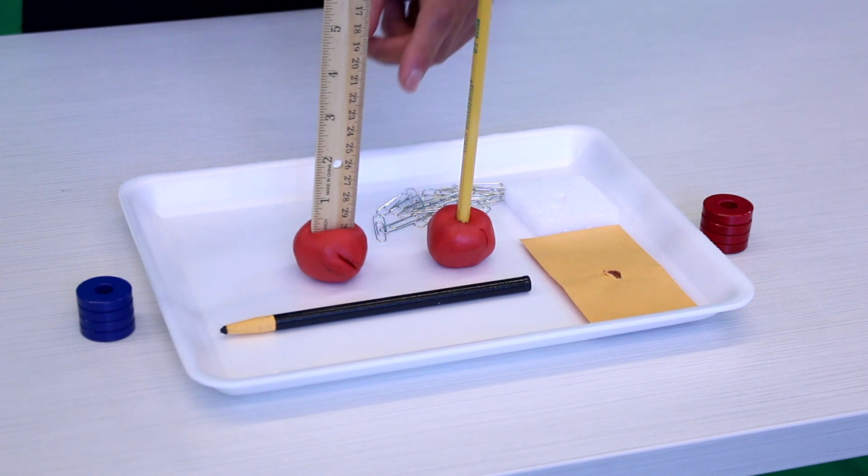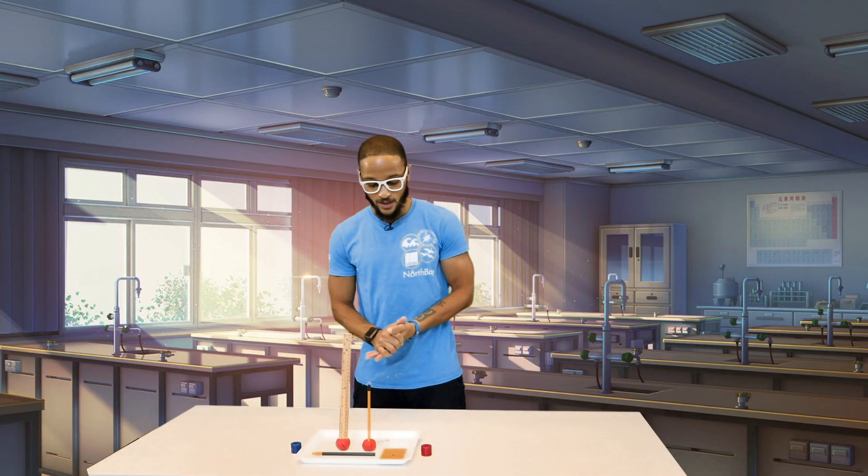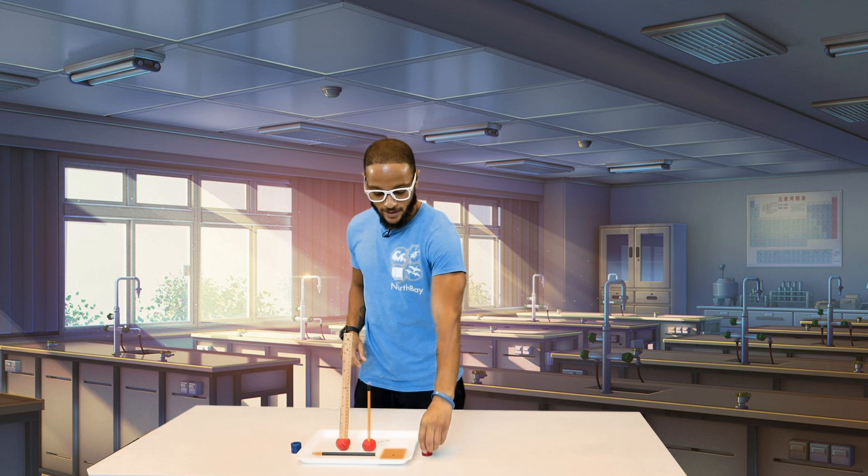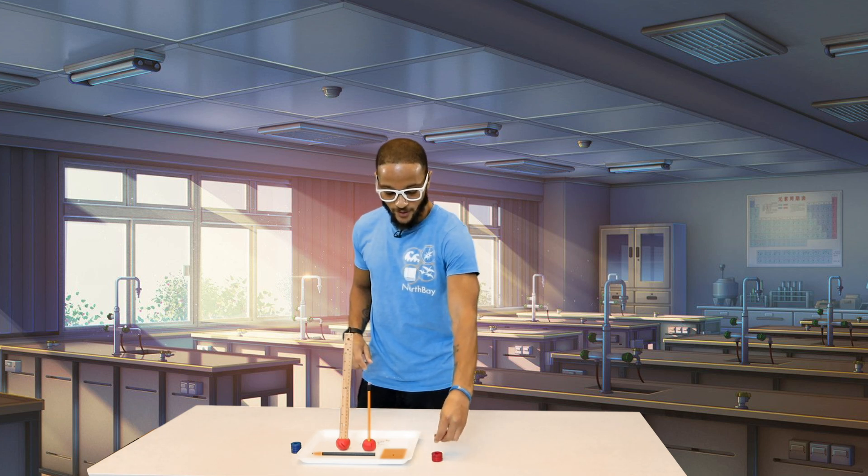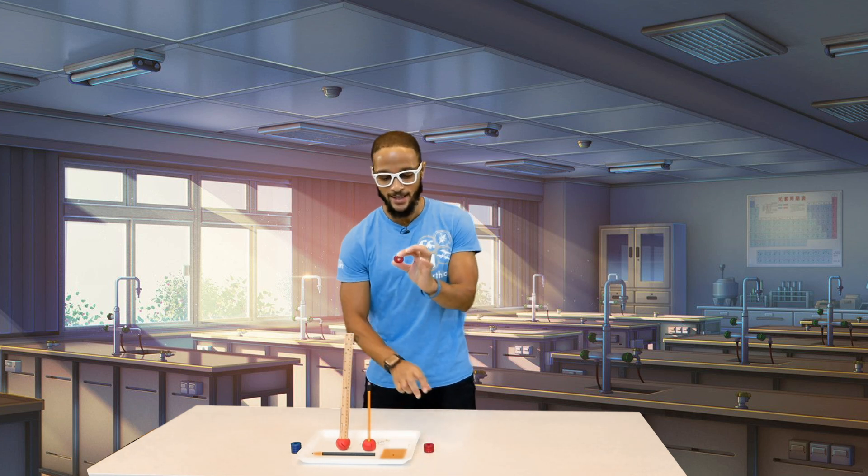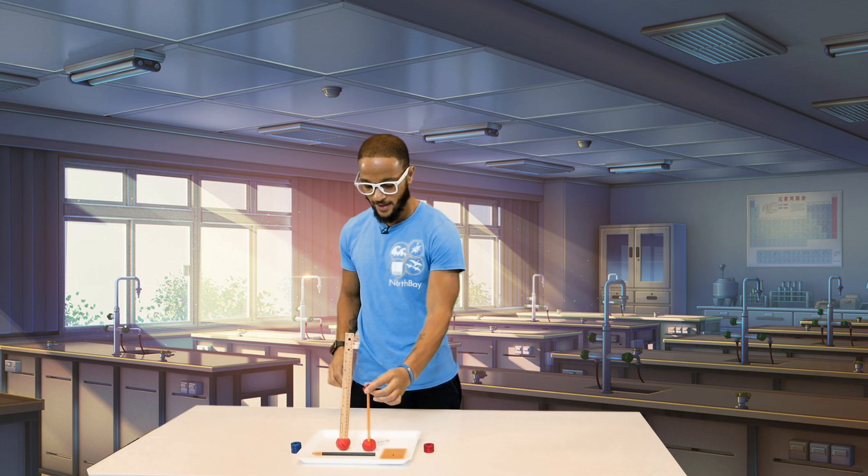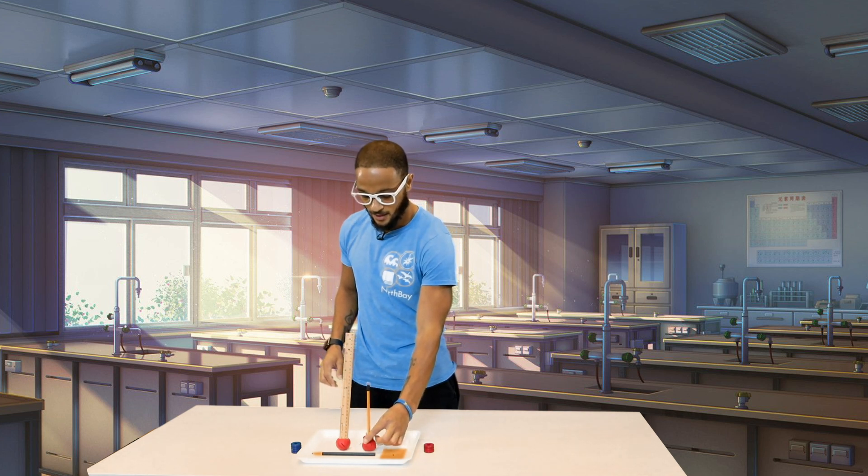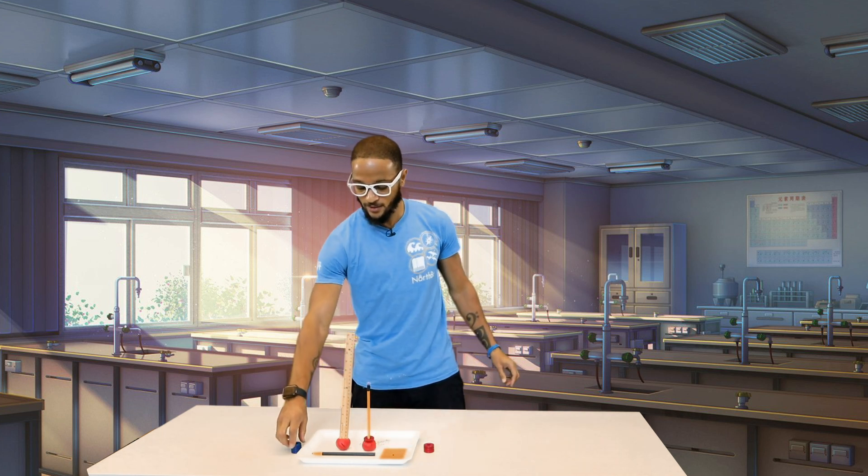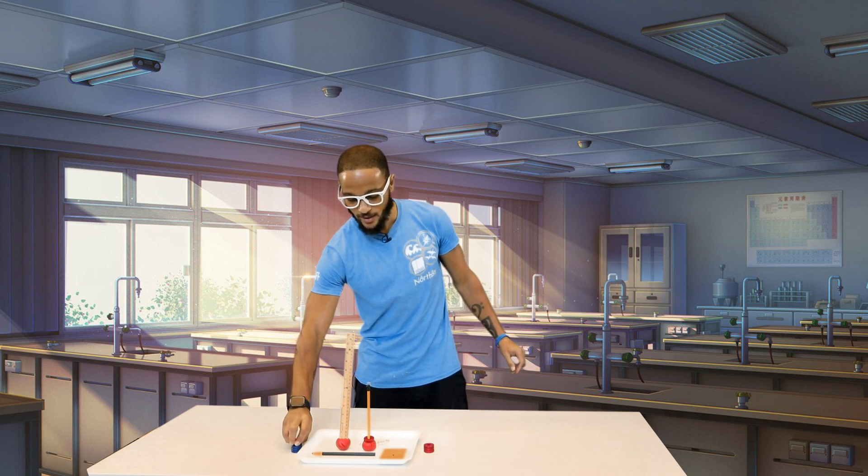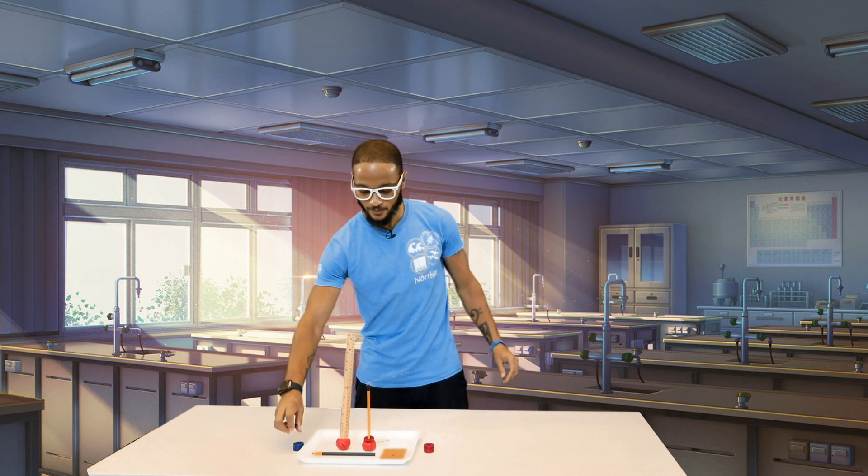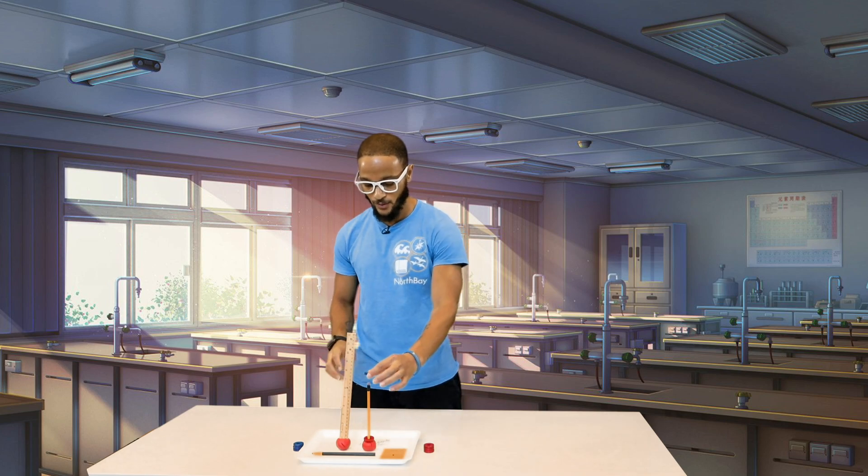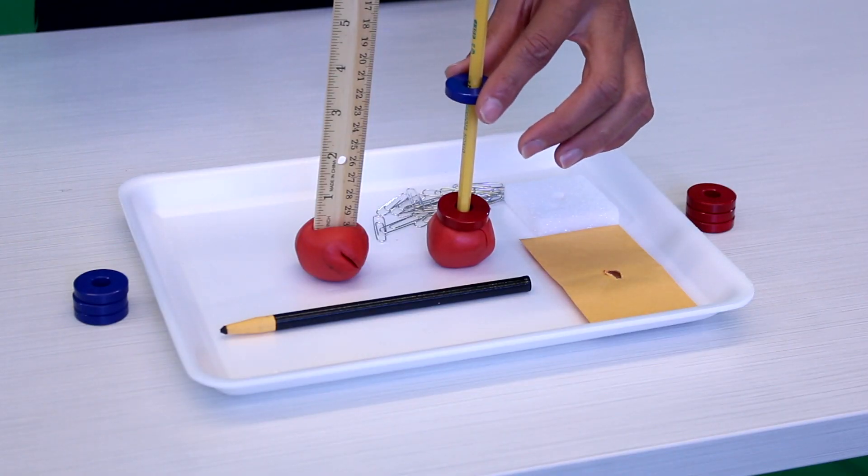All right, so now what we're gonna do is we're gonna take one red magnet, we're gonna put it at the base of our pencil, and we're gonna take one blue magnet and we're going to place it there. Wow, pretty cool right.